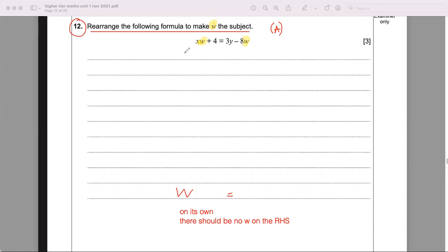To be able to get w on one side here, you can see the minus w here on the right hand side, so we're trying to move it to the left hand side by doing the balance method. I'm going to add w on both sides. So I have xw plus 8w plus 4, and that should give you 3y.